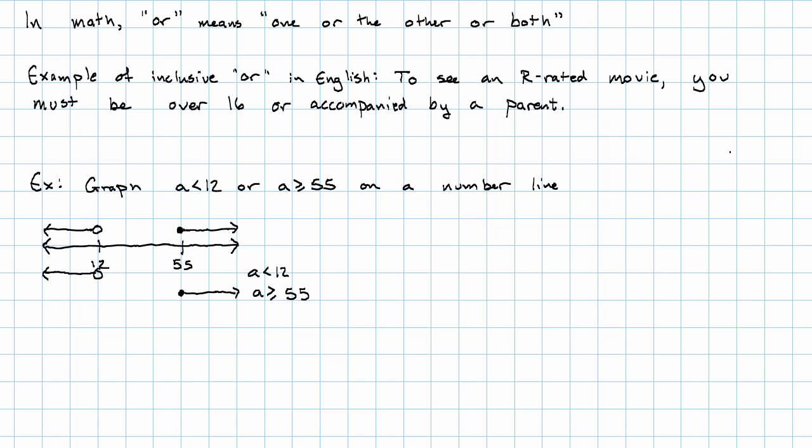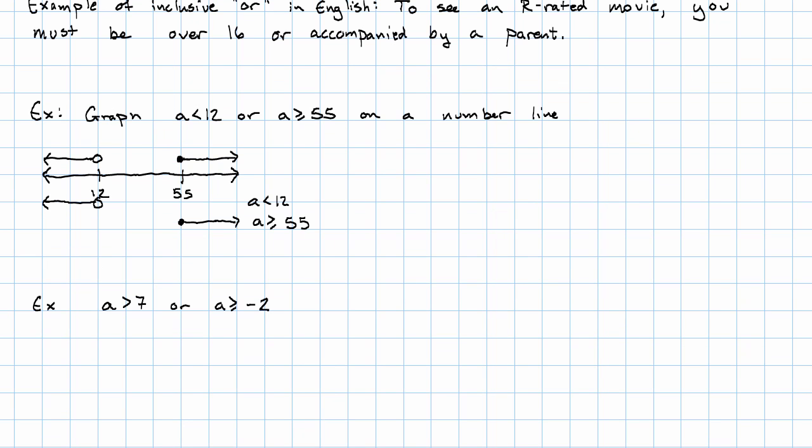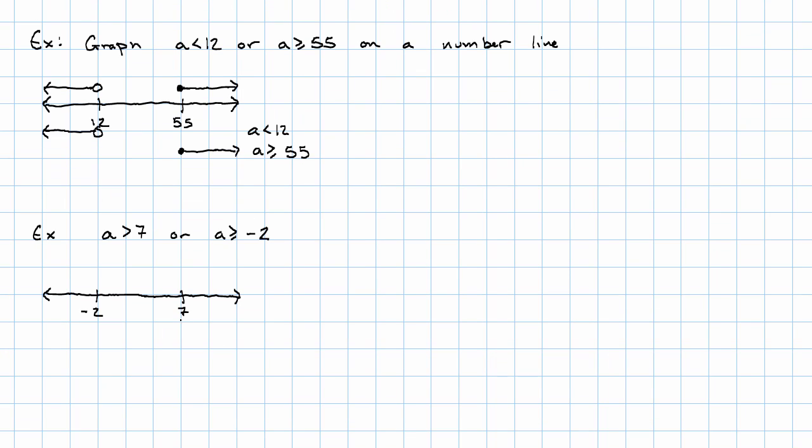There are other things that can happen with an OR inequality. Maybe we have A is greater than 7 or A is greater than or equal to negative 2. Again, I'll graph each inequality separately. Here's A is greater than 7. Here's A is greater than or equal to negative 2.